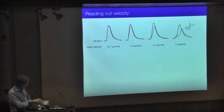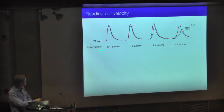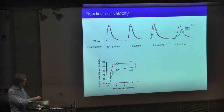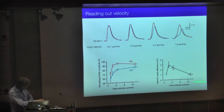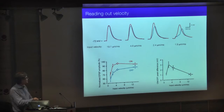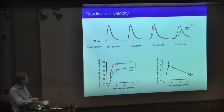Changing the velocity of activation — the gap between individual inputs — shows that over a wide range of input speeds, on always wins over off. There is an optimal input velocity for producing the largest on-off difference, meaning we can read out not only the direction of activation but also the speed of activation.